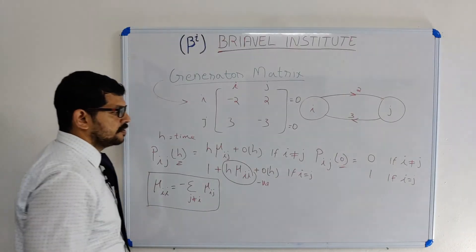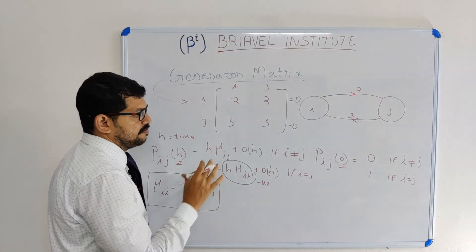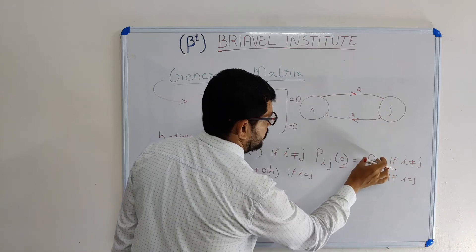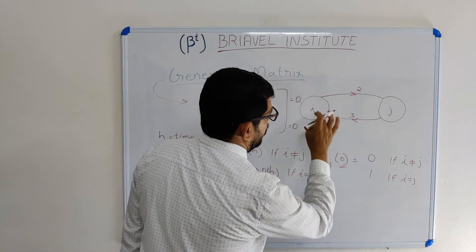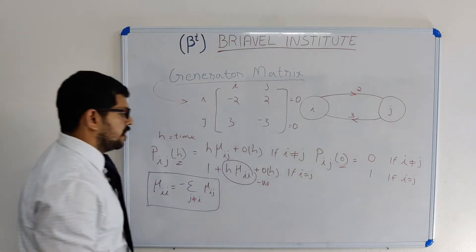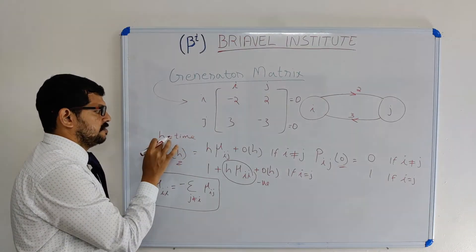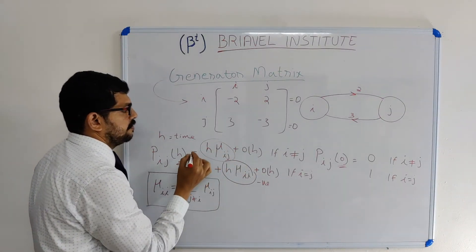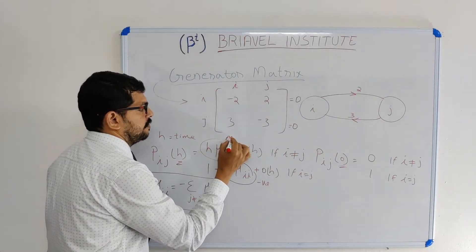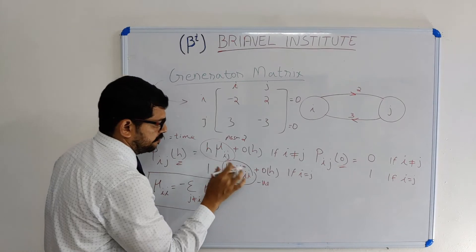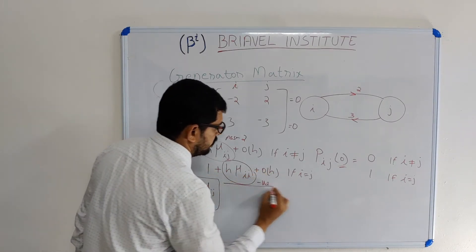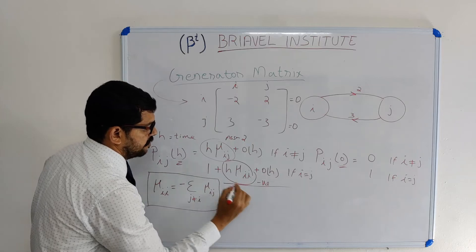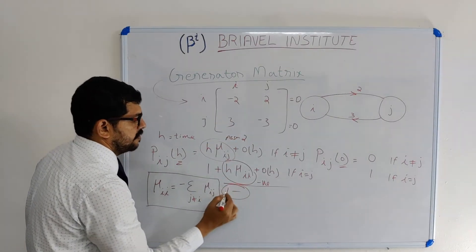To summarize: continuous time is divided into jump chain and holding time. P(i,j) at time 0 is 0 if i ≠ j and 1 if i = j, because there is no transition at time 0. At small time interval h, P(i,j) = h·μij + o(h) for i ≠ j (from Markov process assumption 2), and P(i,i) = 1 minus h·μii, which is always 1 minus some transition rate.